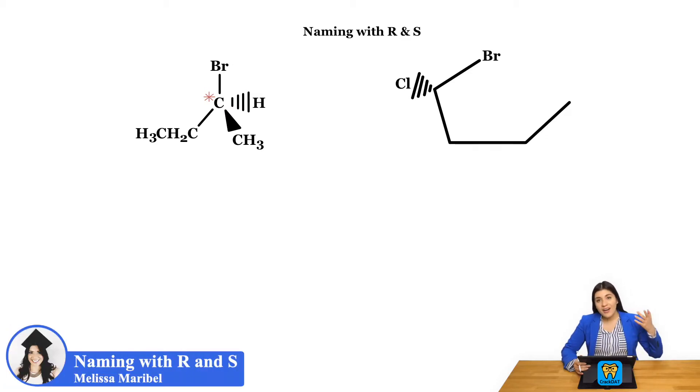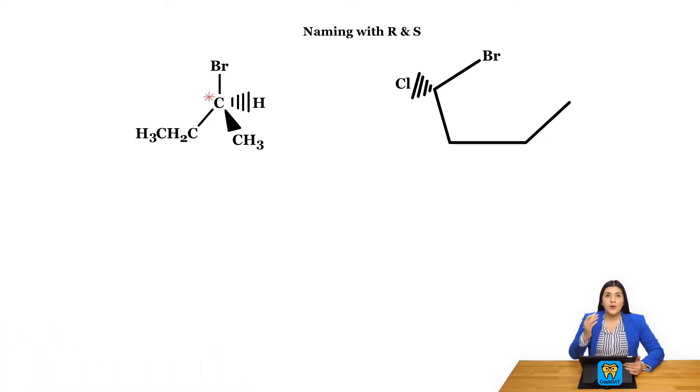Now for naming with R and S, remember with R and S we specifically are looking at our chiral center and we're assigning priority and identifying first if this is either an R or an S configuration.